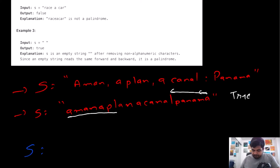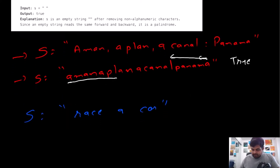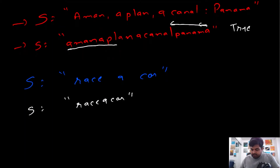In the second example, there are non-alphanumeric characters — two space values — so after removing them we get a cleaned string. Checking it: r matches r, a matches a, c matches c, but this e does not match — we have an a on the other side. So this is not a palindrome and we return false.